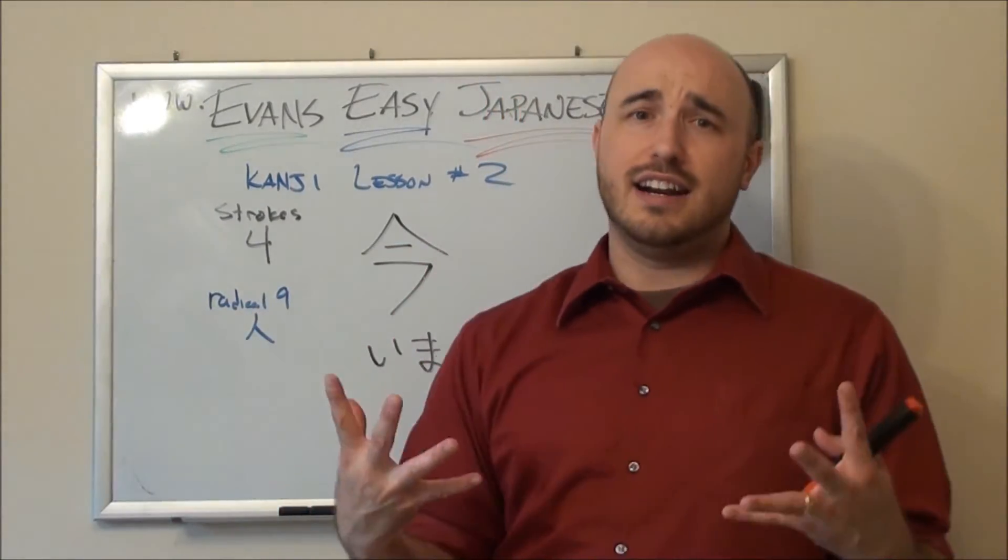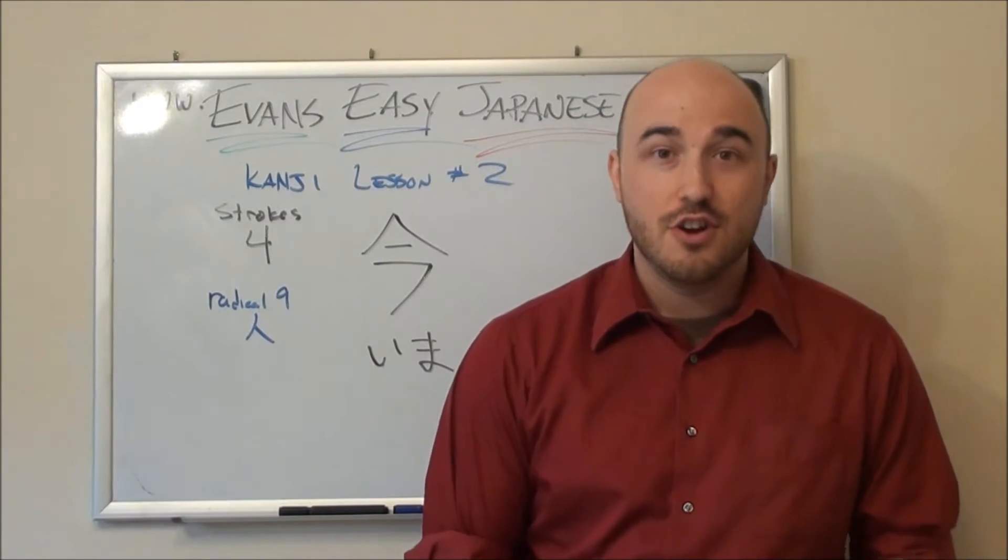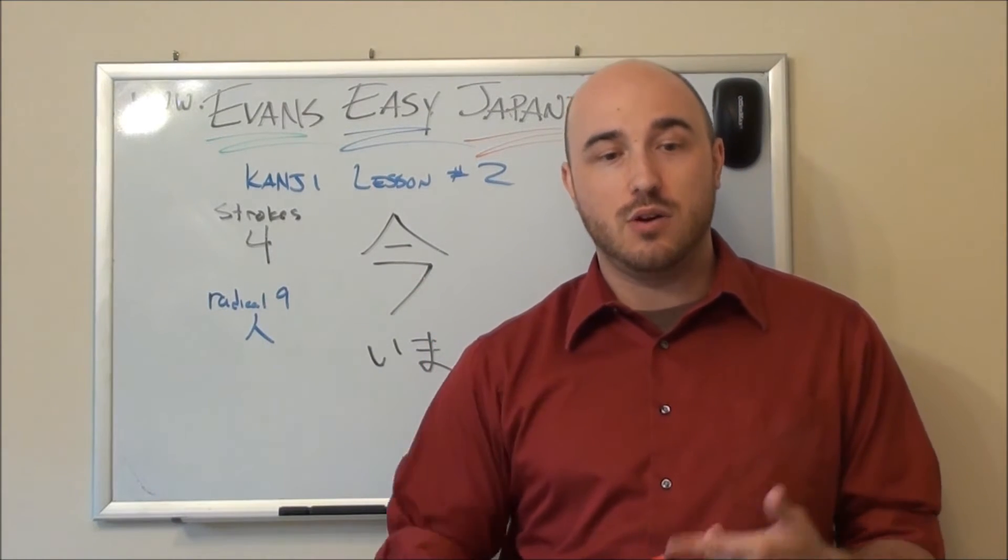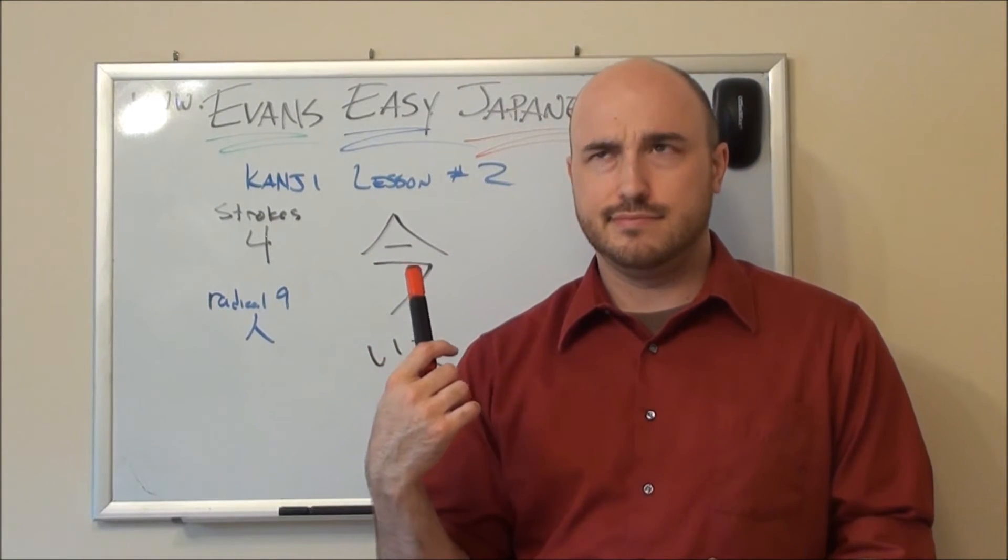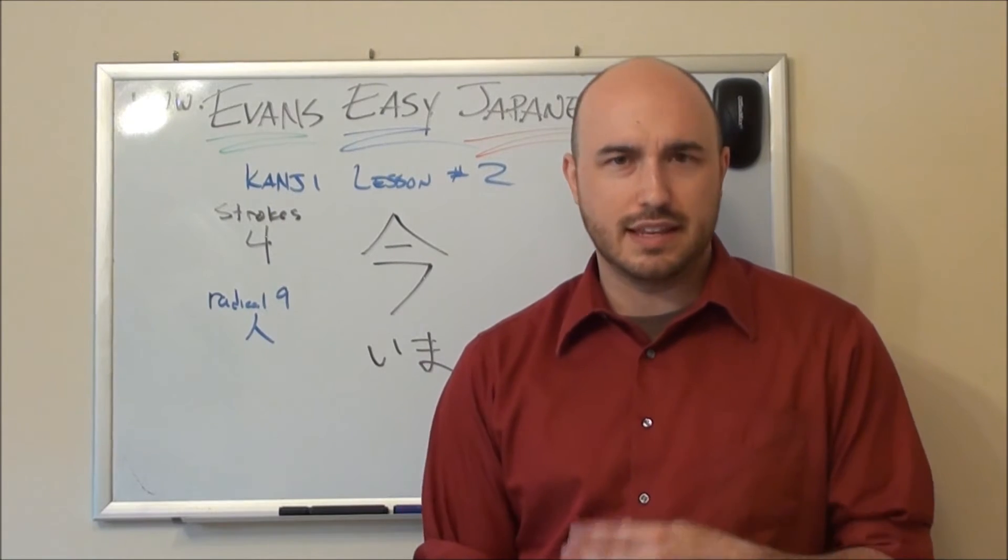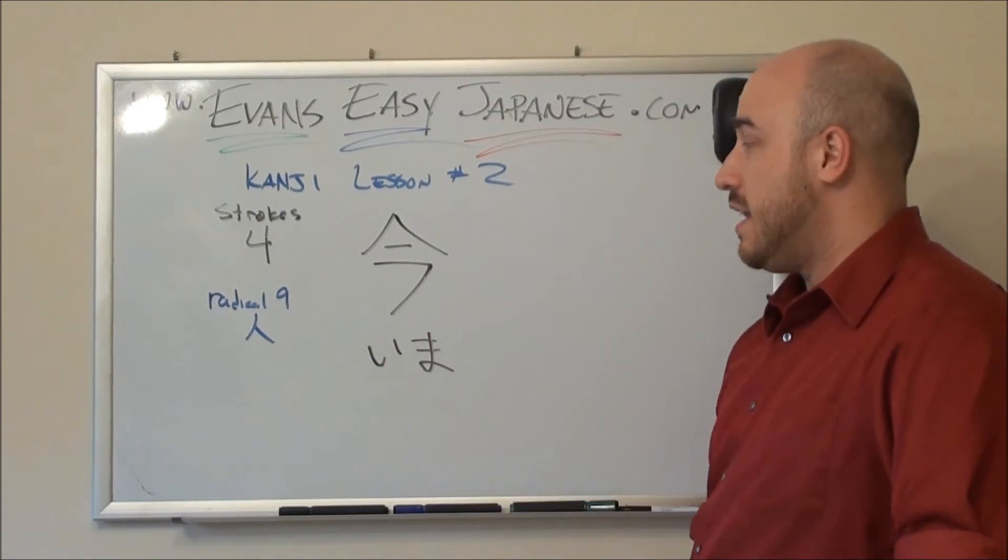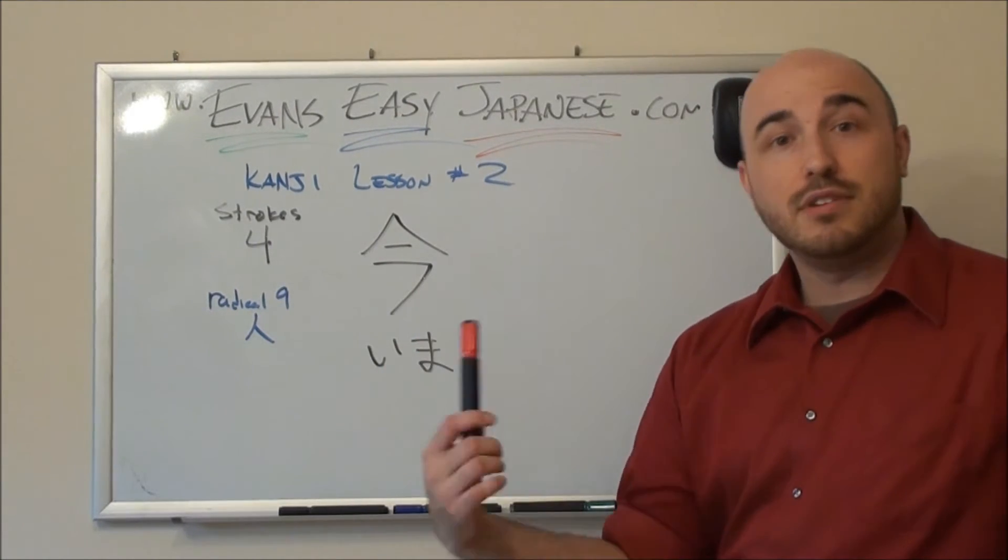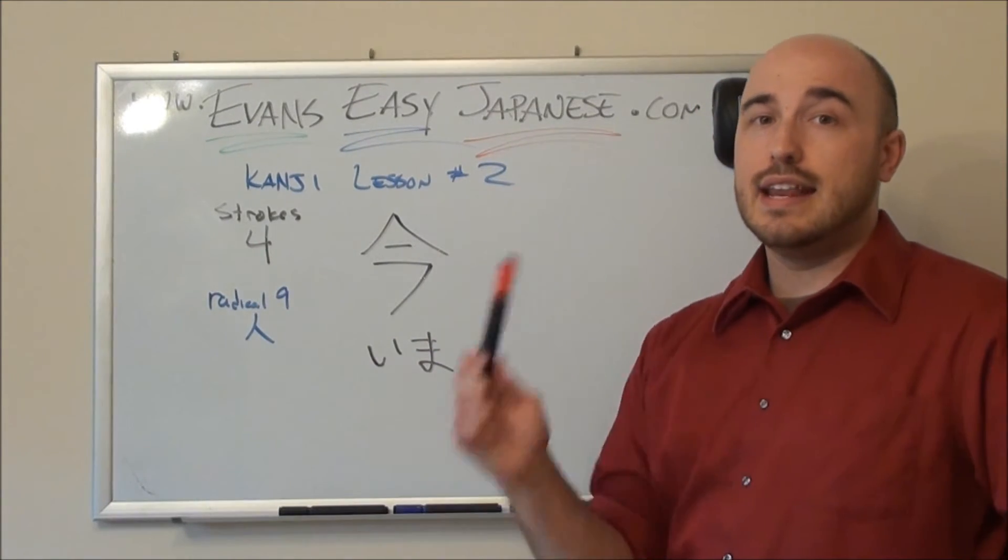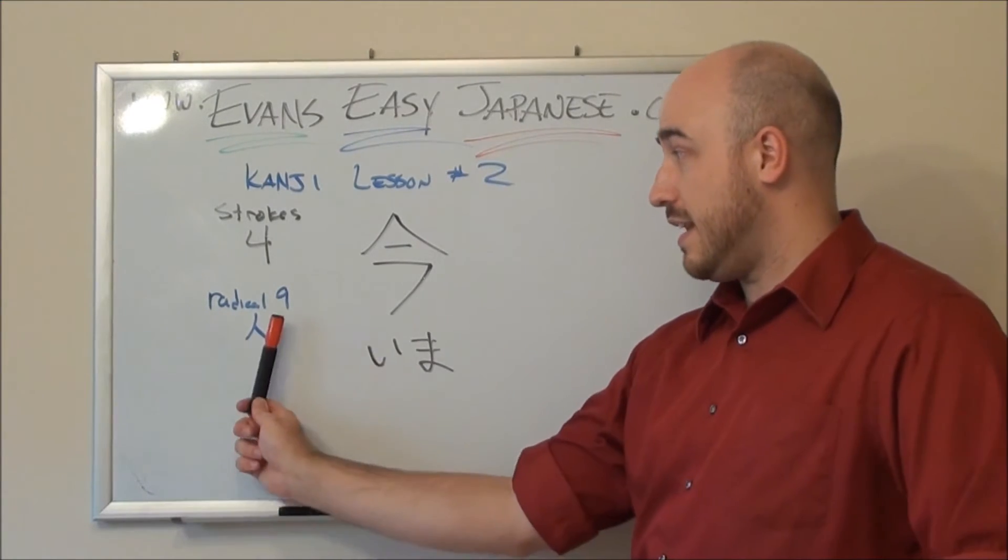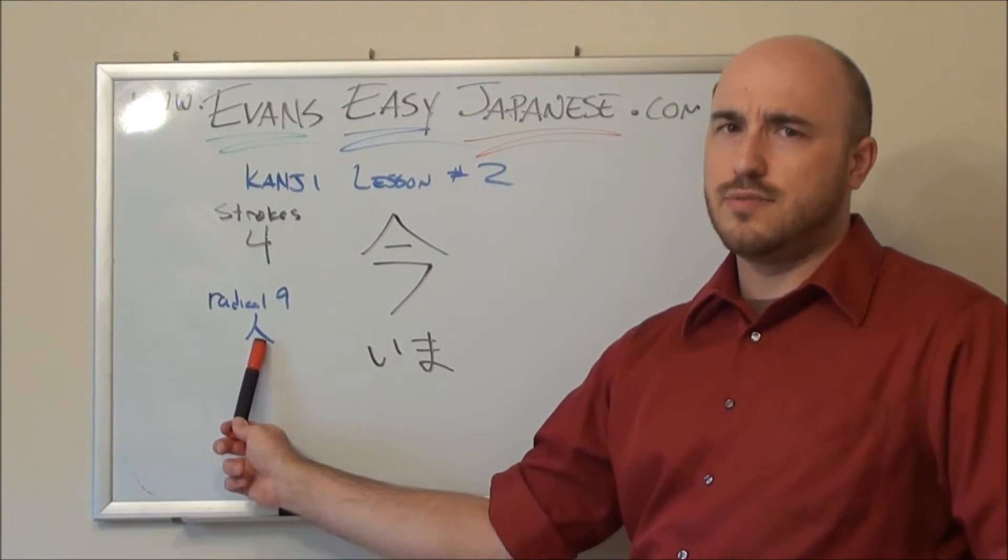Last kanji we're doing today. Sorry, it's only six. This is Ima, the kanji for now. When you're talking about something happening now or in some way referencing now, you're going to see this kanji. For example, the word today has it. This year has this kanji. Ima is the pronunciation we're learning today. This one has four strokes in it. It is not its own radical. The radical that it has, we just learned today. The person radical is its radical. Number nine.